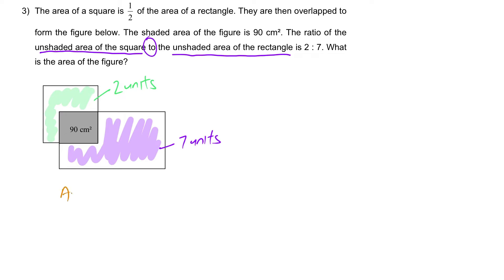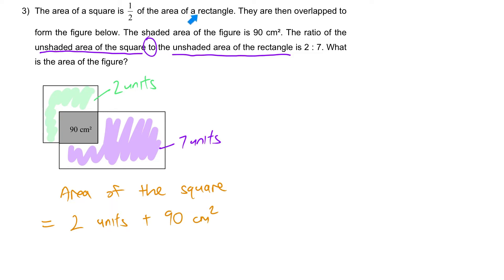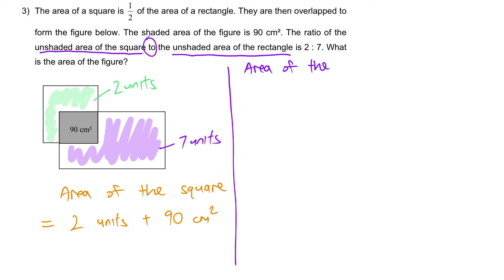Step 1: area of the square. Based on this figure we can see that the area of the square is 2 units plus 90 cm². Given the fact that it is half the area of the rectangle, the area of the rectangle is twice of this — therefore it is 4 units plus 180 cm².